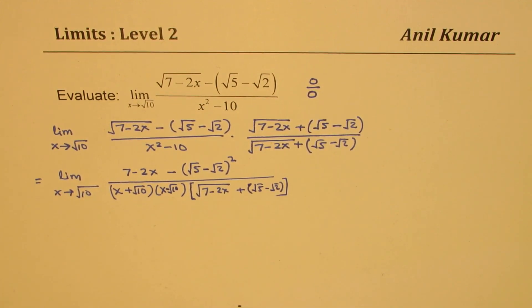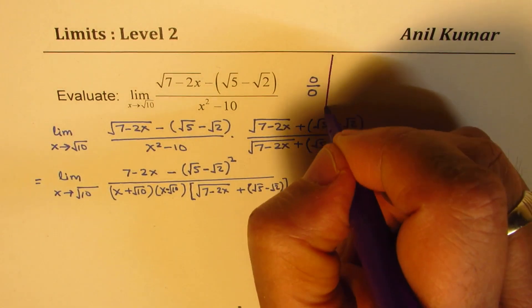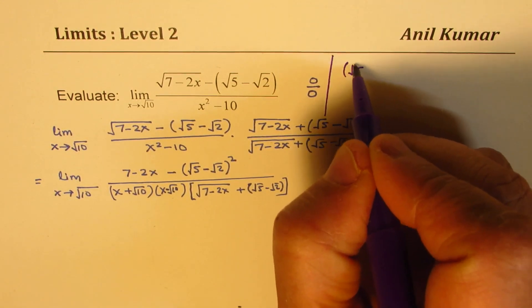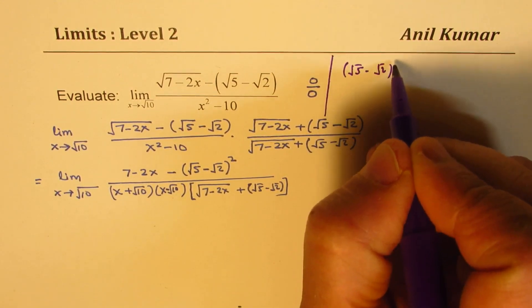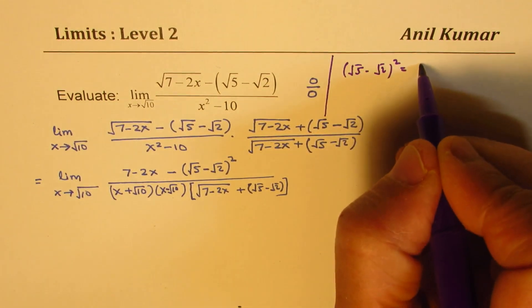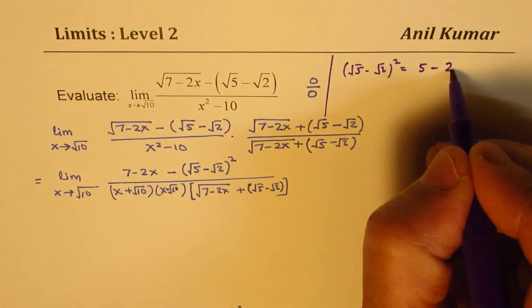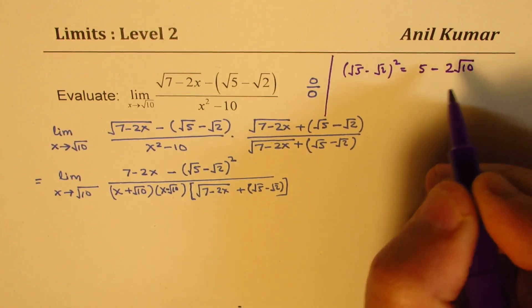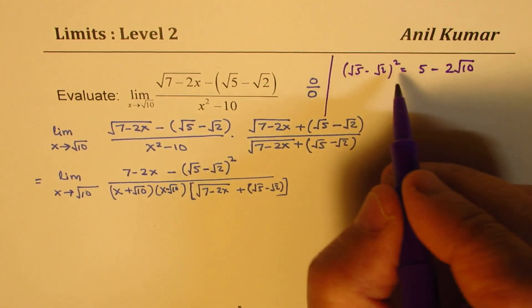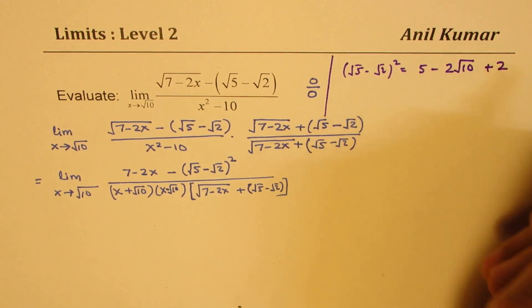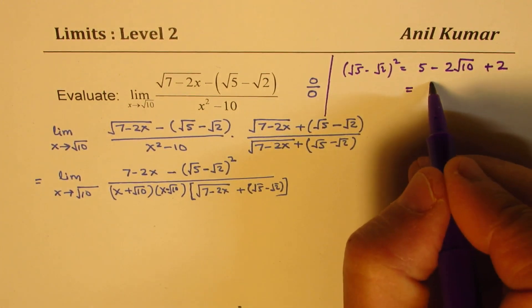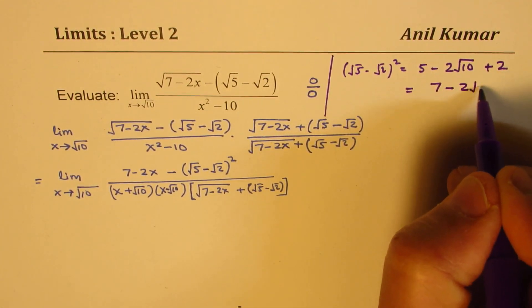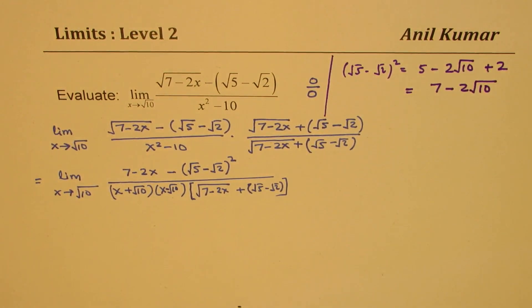Let's calculate on the side: square root of 5 minus square root of 2, whole squared, equals a squared minus 2ab plus b squared, which is 5 minus 2 times square root of 10, plus 2. So this equals 7 minus 2 square root of 10. And that is why we got 0 in the numerator when we substitute square root of 10.